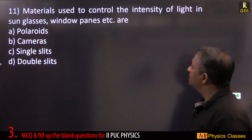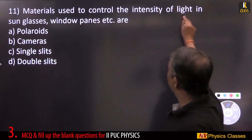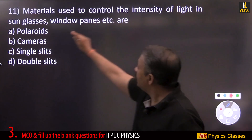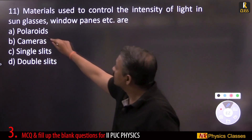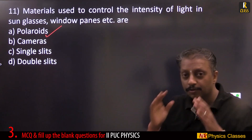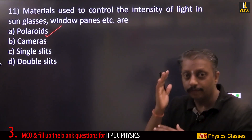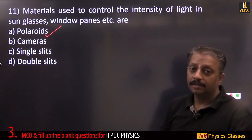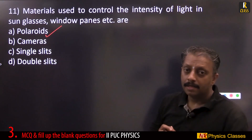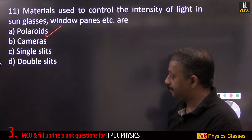Materials used to control the intensity of light in sunglasses are polaroids. Polaroids are used to cut off and decrease the intensity of light.